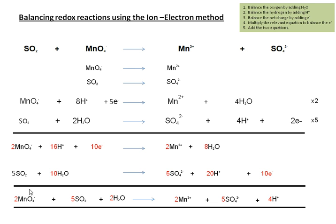Here we see the net equation for balancing a redox reaction in an acidic medium, where we only have H+. Now, if we take this further and use the same equation where we have MnO4⁻, SO2, and H2O giving Mn2+, SO4²⁻, and 4H+, we want to balance this equation in a basic medium.